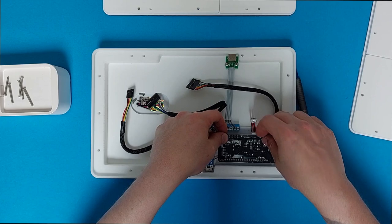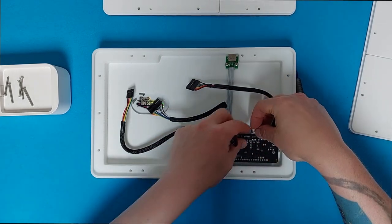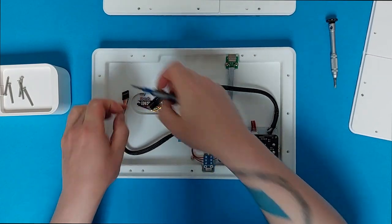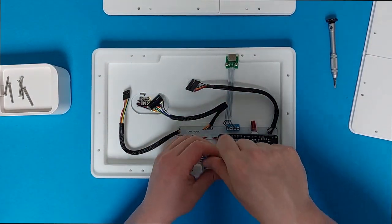So, let's put your Brook board back in. It's as simple as pushing down onto those connectors and putting your two screws back in place.